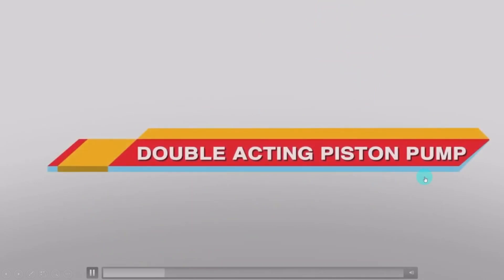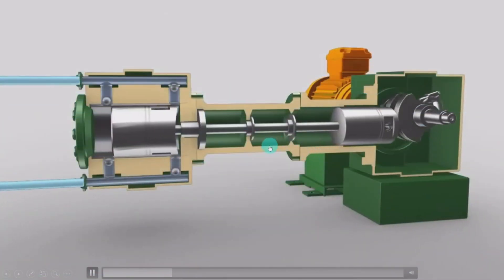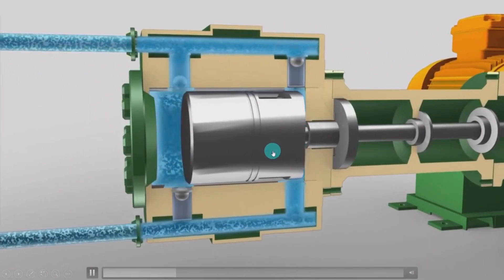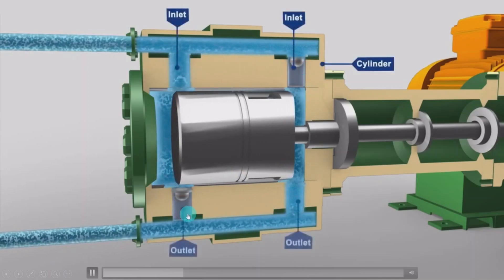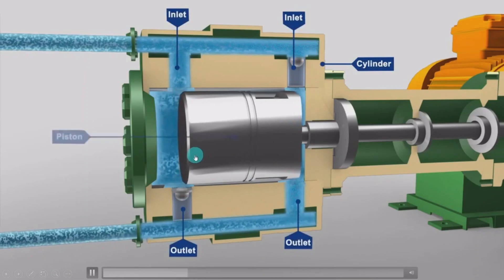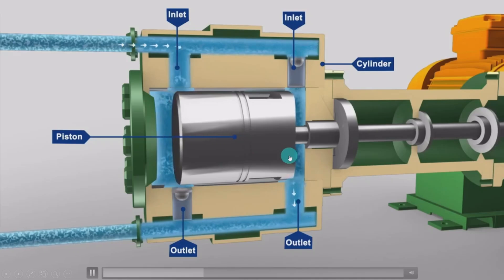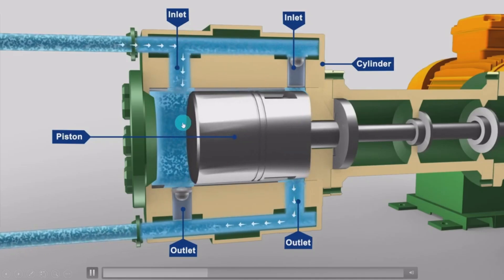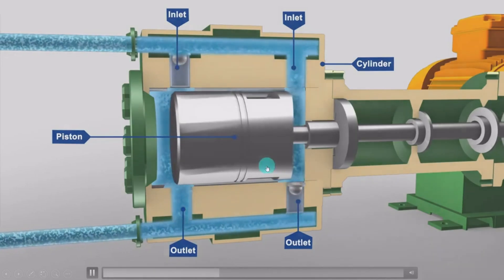The double acting piston pump works similarly to the single acting plunger pump, but it has two inlets and two outlets. When the piston reaches the front end, fluid enters at the rear end and the front end fluid is discharged at the outlet. When the piston goes back to the rear end, fluid enters at the front end and the rear end fluid is discharged. This way, continuous fluid flow is achieved.